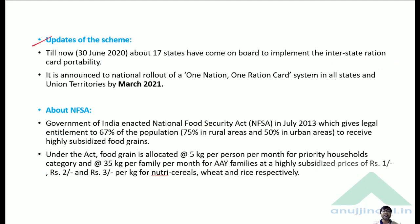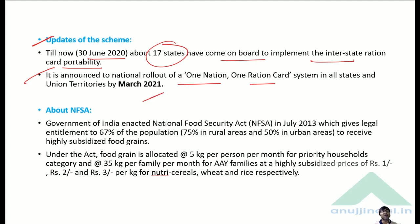As of 30 June 2020, about 17 states have come on board to implement interstate ration card portability. It has been announced that the One Nation One Ration Card system will be nationally rolled out by March 2021, covering the entire country.